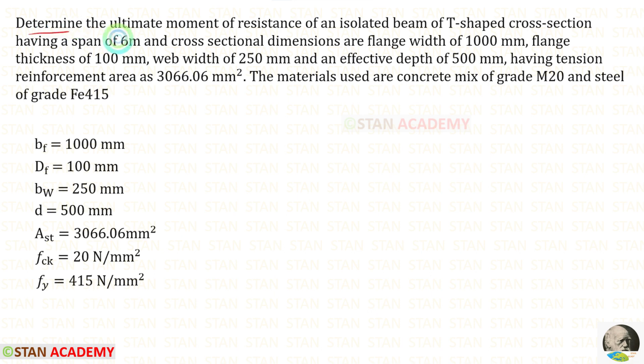Determine the ultimate moment of resistance of an isolated beam of T-shaped cross-section having a span of 6 meters and cross-sectional dimensions of flange width of 1000 millimeters, BF equals 1000 millimeters. Flange thickness of 100 millimeters, DF equals 100 millimeters.